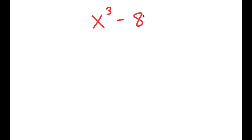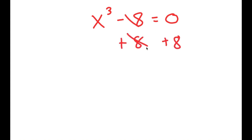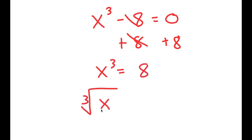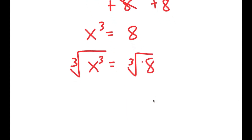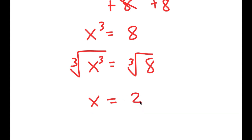In this video, I'm going to solve the equation x to the power of 3 minus 8 is equal to 0. How most people solve this equation is they add 8 on both sides, so they get x to the power of 3 is equal to 8, and then they take the cube root on both sides. The cube root of x to the power of 3 is x, and the cube root of 8 is 2, so they get x equals 2, which is a solution to this equation.